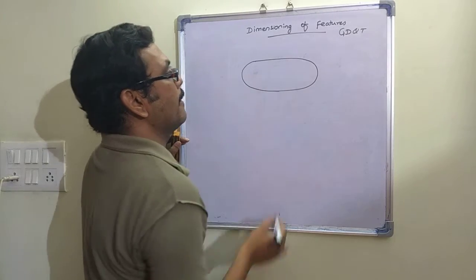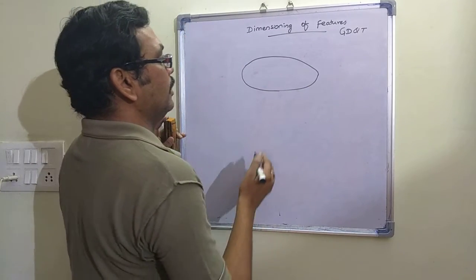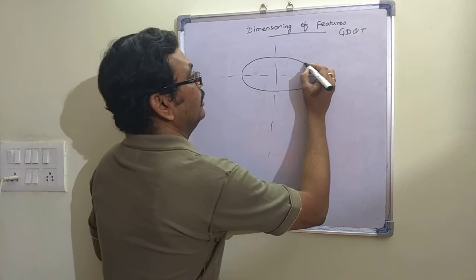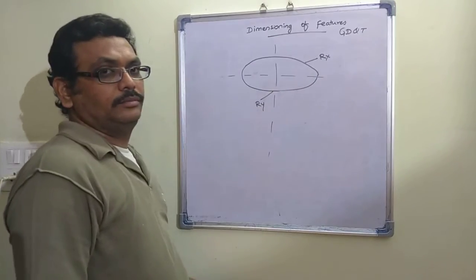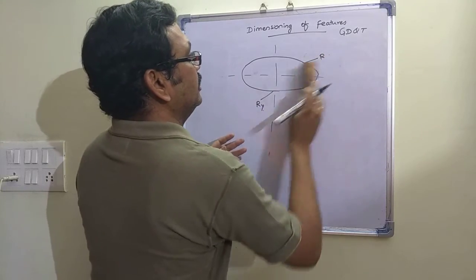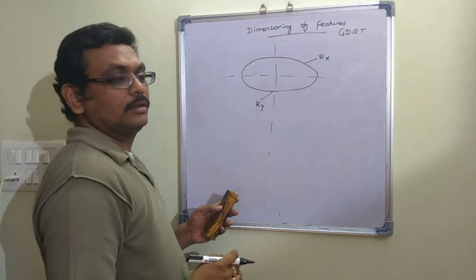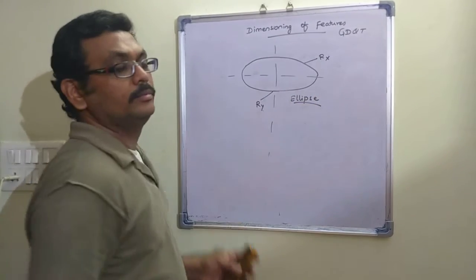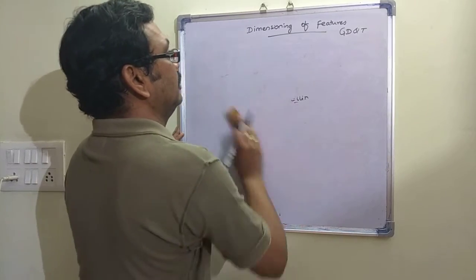For an ellipse, we define the axis and provide two radii: Rx and Ry. Here, X and Y are suffixes — not dimensions — they are an indication of the ellipse semi-axes. The position of the ellipse is mandatory to specify. This is how an ellipse is dimensioned.